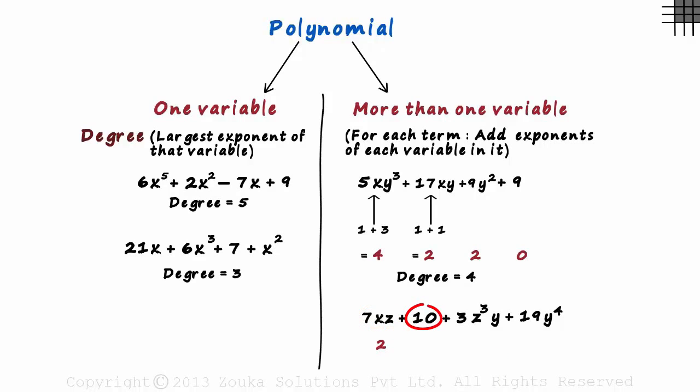In the third term, it's 3 plus 1 which equals 4. And in the fourth term as well, the exponent is 4.